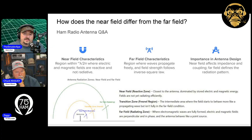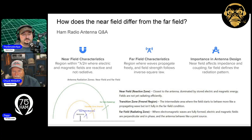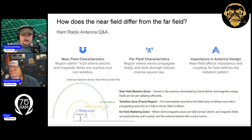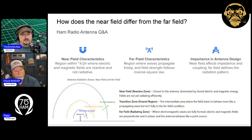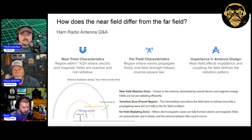Just beyond the near field is something called a transition zone — some folks will call it the Fresnel region. That's where the radiation starts to sort itself out and determine how it's going to radiate, in which directions and at which strength from your antenna. And that is what becomes visible in the far field of your radiating zone.